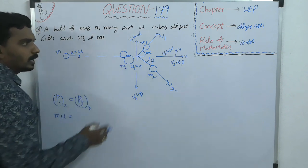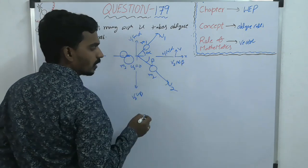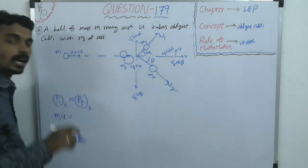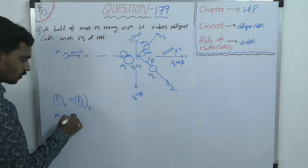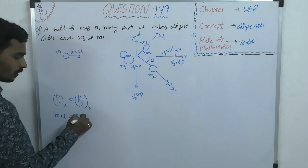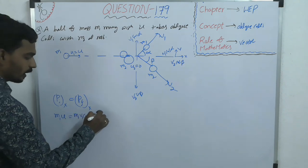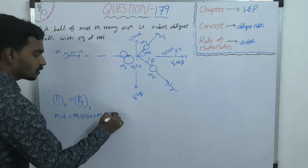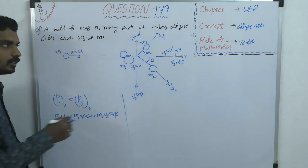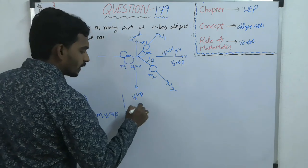Then finally, M1 is moving with V1 cos alpha, M2 is moving with V2 cos beta along X not Y. So M1 V1 cos alpha plus M2 V2 cos beta. This is one equation, then along Y direction.